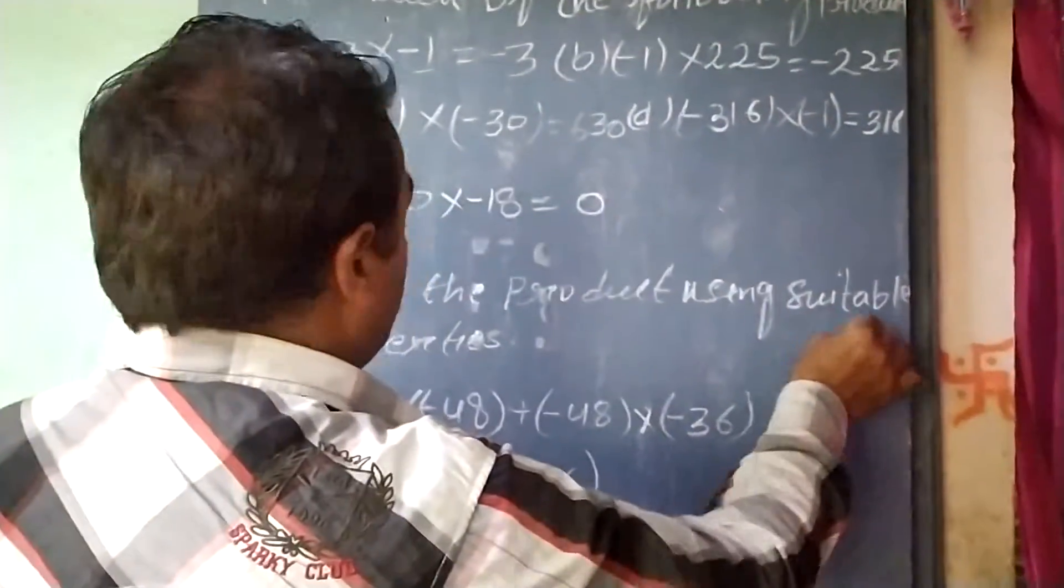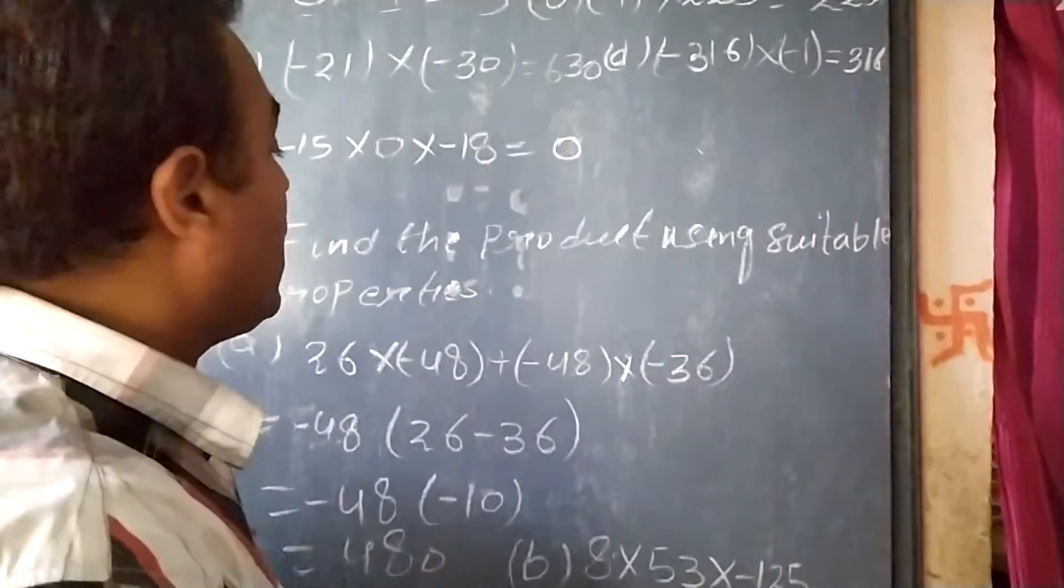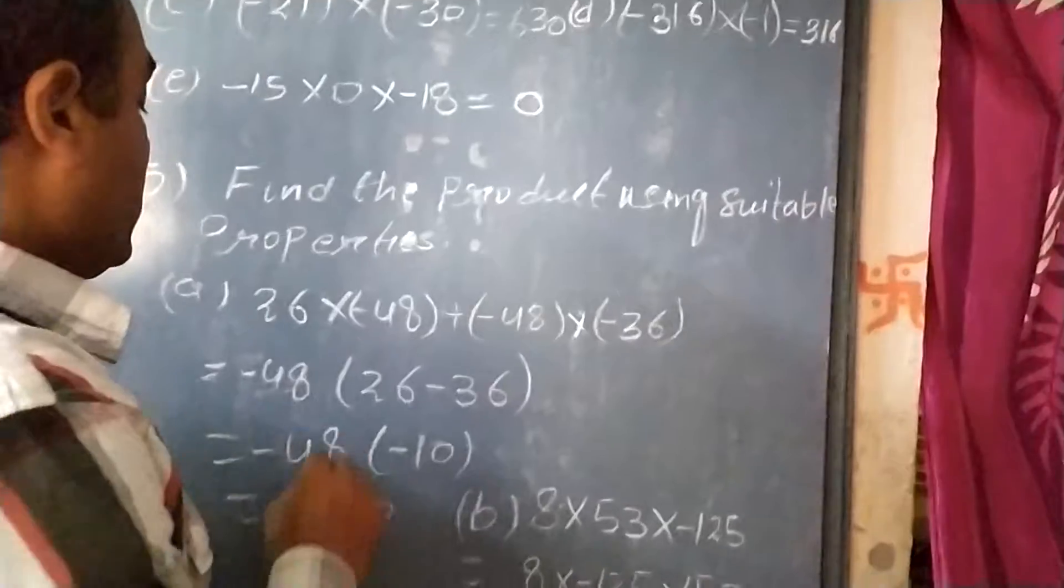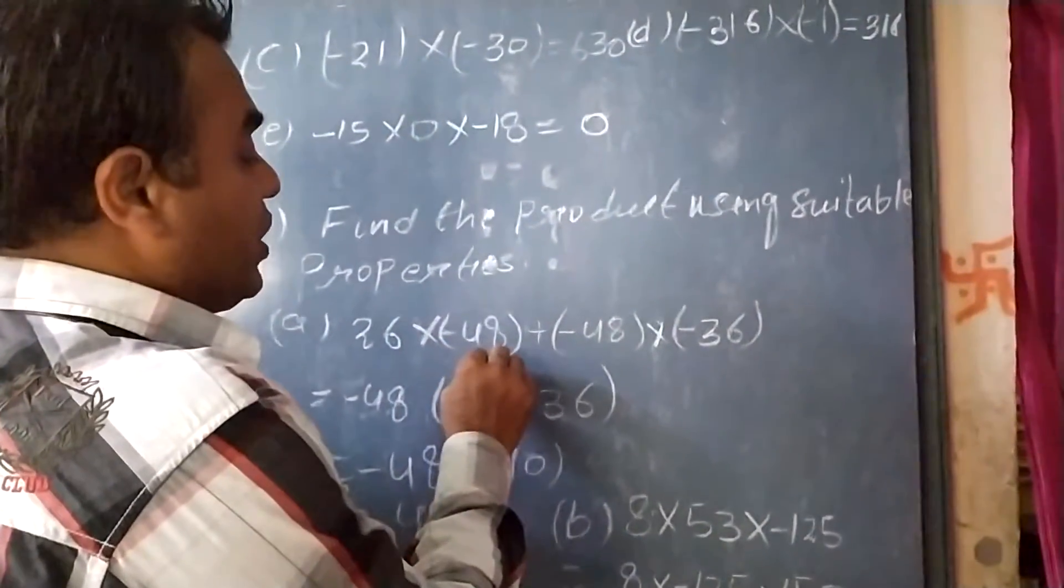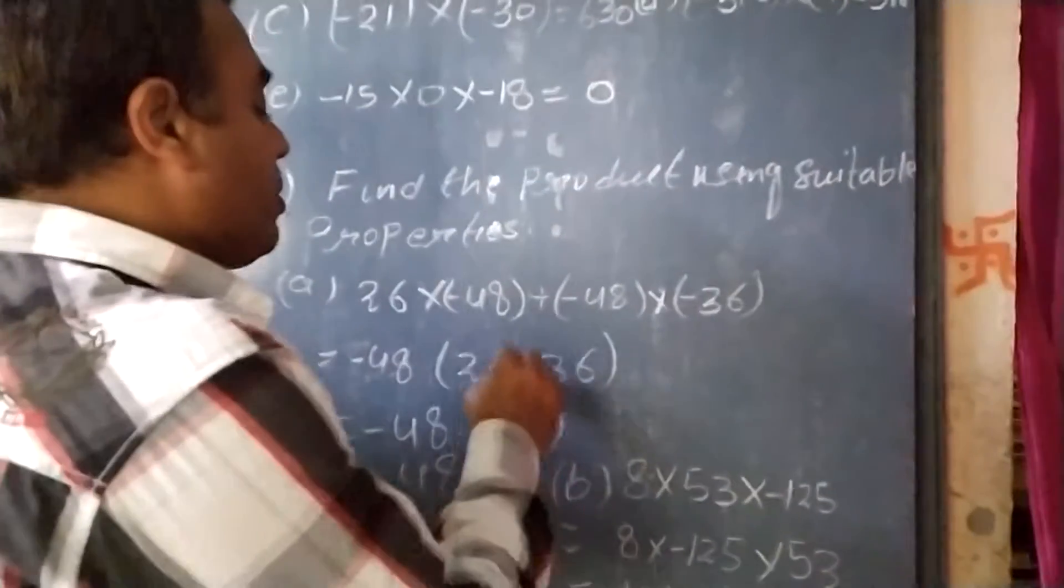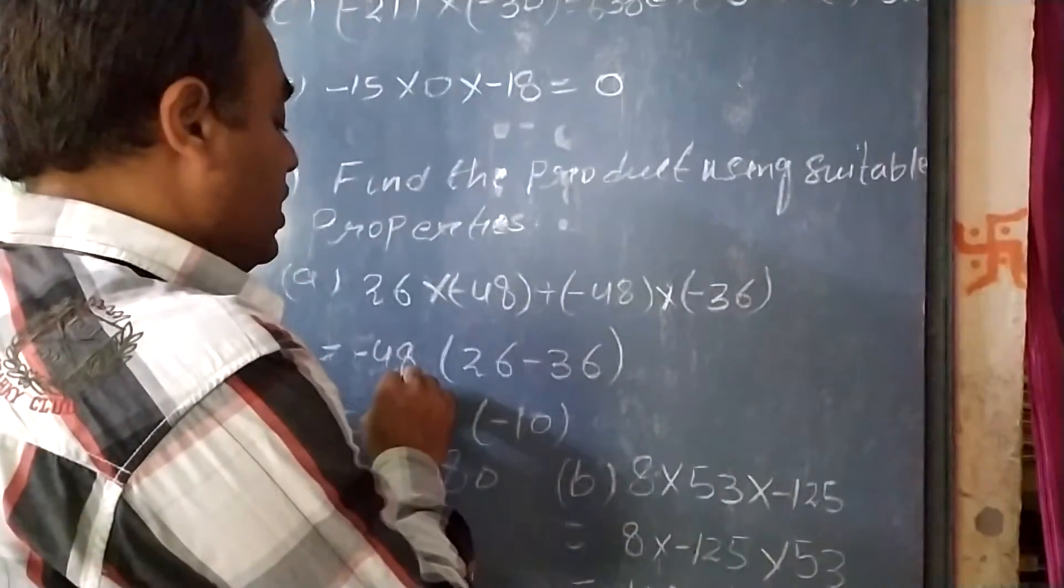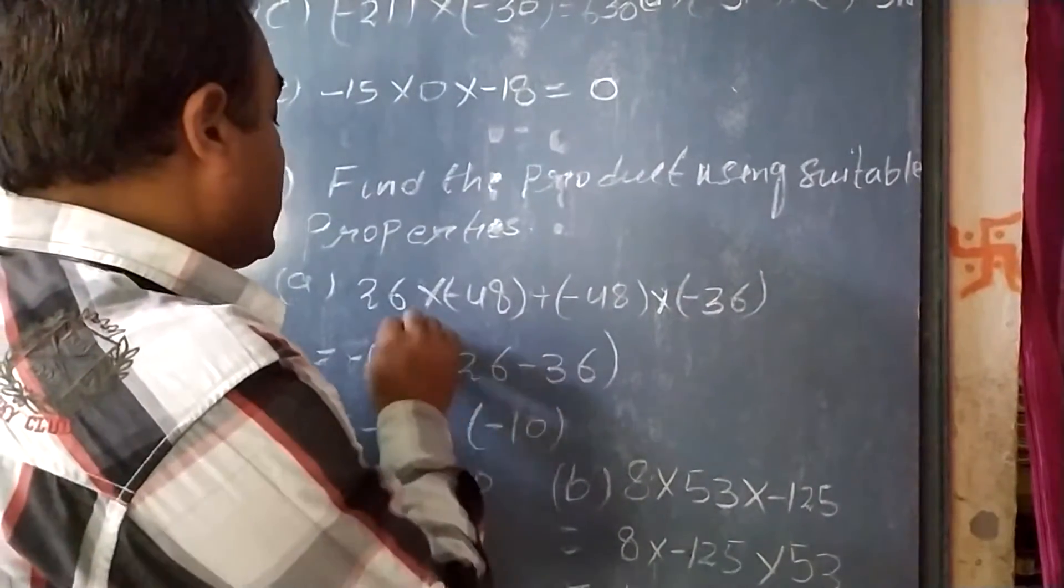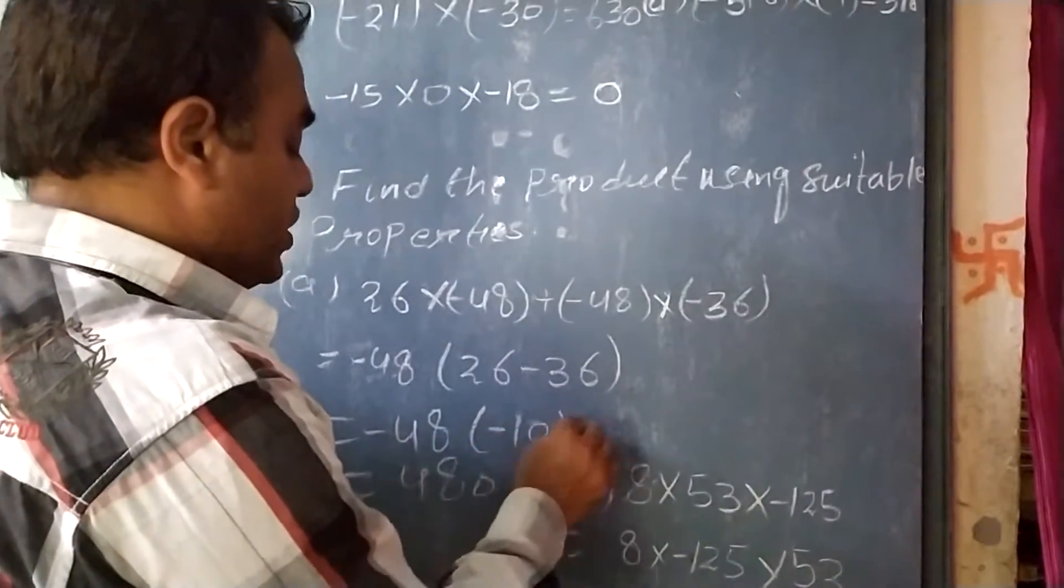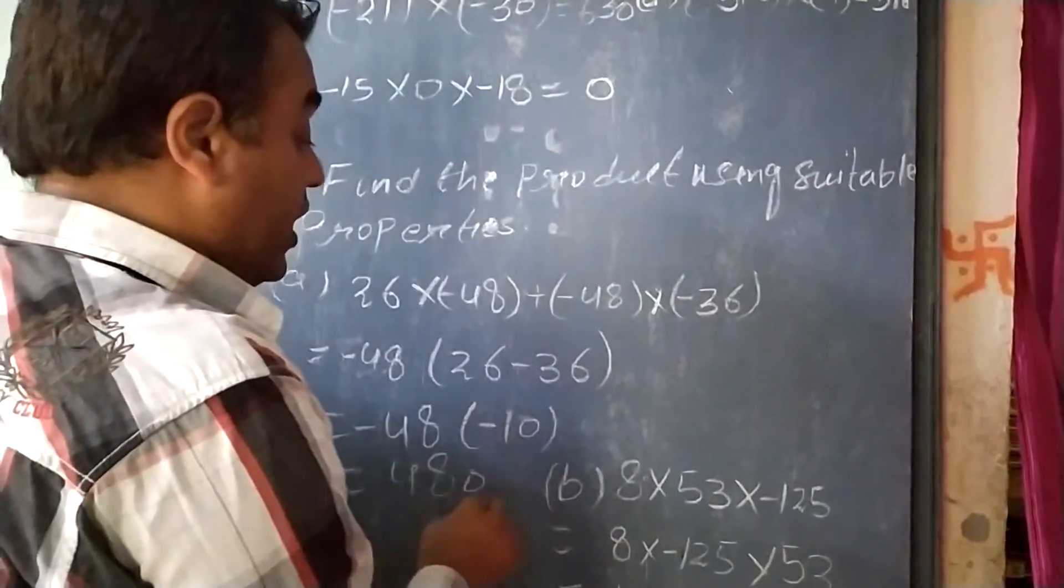Find the product using suitable properties. Question number 5: 26 multiplied by minus 48 plus minus 48 multiplied by minus 36. We will take common minus 48, so we get minus 48 times (26 minus 36). That's minus 48 times minus 10, so minus times minus will give plus 480.